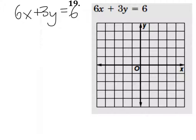So from here, in order to write it in slope-intercept form, we need to isolate the y, so I'll subtract 6x from both sides, and that gives me the 3y.